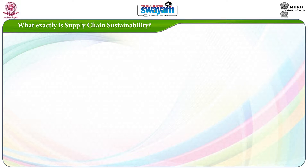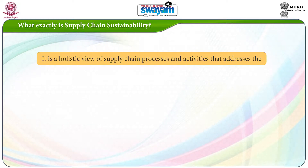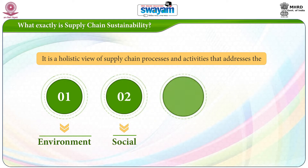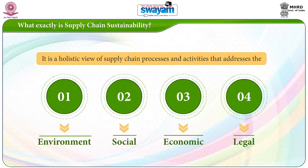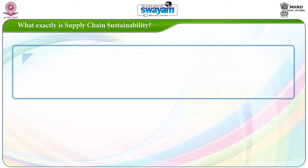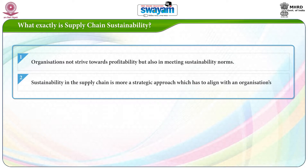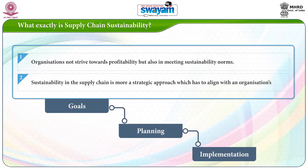Supply chain sustainability is a holistic view of supply chain processes and activities that addresses the environmental, social, economic and legal aspects thoroughly. Today, organizations not only strive towards profitability but also struggle to meet sustainability norms. Therefore, sustainability in the supply chain is more a strategic approach which has to align with an organization's goals, planning and implementation.